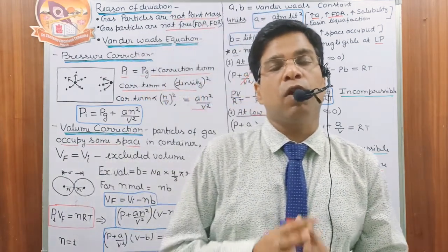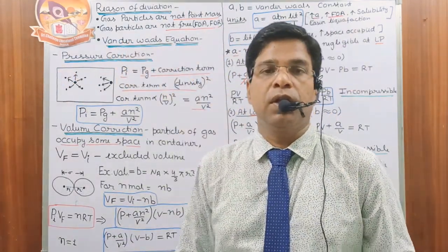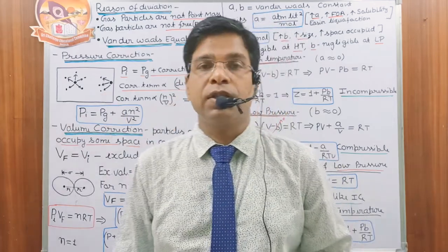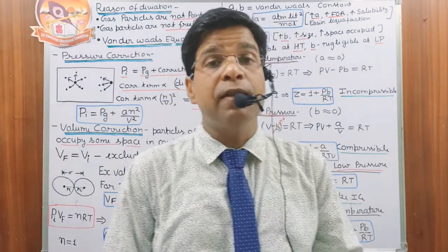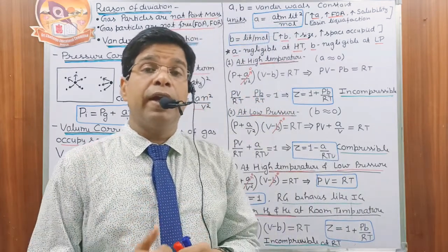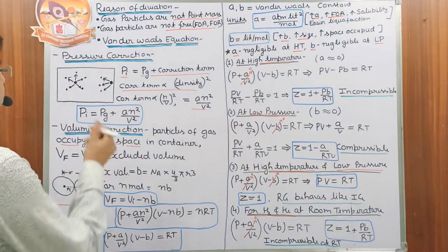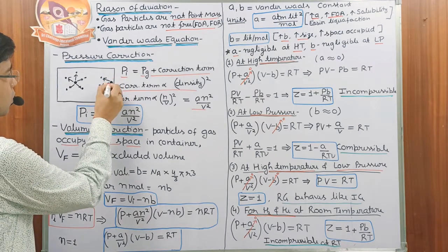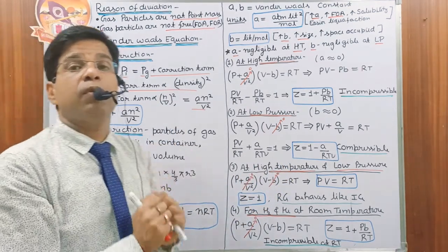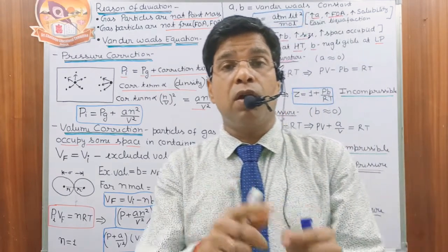Scientist J.D. Van der Waals modified the ideal gas equation for real gases, which is called the Van der Waals gas equation. He corrected two things: pressure and volume. For the pressure correction, he said that the pressure in the ideal gas equation is the ideal pressure — when gas particles are free from each other, every particle collides on the wall and exerts 100% force. But in real conditions, when a reference particle is just about to collide on the wall, other particles behind it pull it in the reverse direction.